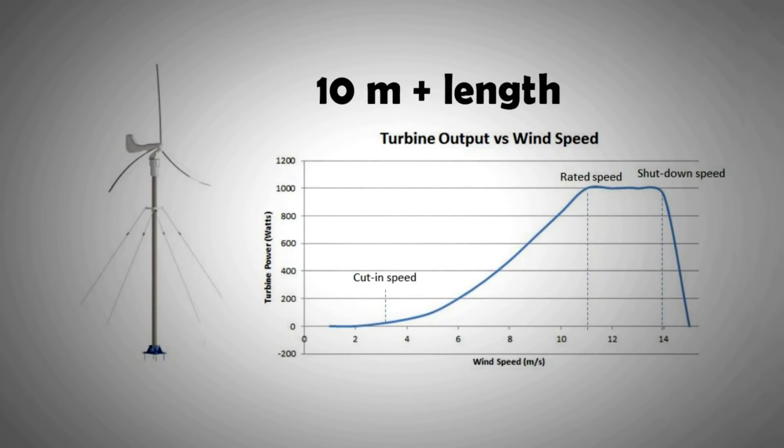Today, taller masts are available for smaller turbines, which gives their performance a huge boost. Previously, we have noted that wind turbines, particularly on the lower end, were mounted on masts which were much shorter than 10 meters. This reduced their performance substantially.